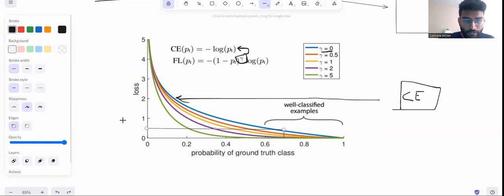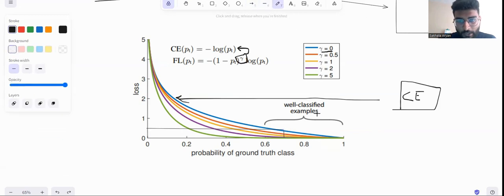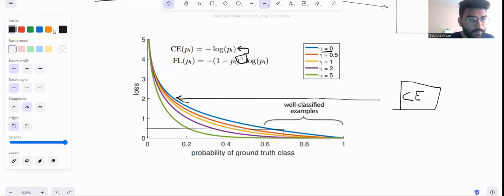So what I try to do is, if it was cross-entropy I would have worked more on optimizing this loss. But what focal loss will do is, let's say I have focal loss with gamma 5. With same probability of 0.7, let's say rather than using green one I'll use the purple one which is gamma equal to 2.